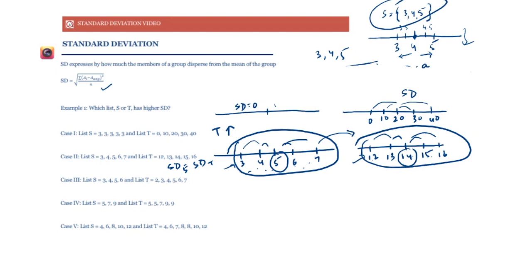In case 3: S = {3,4,5,6} and T = {2,3,4,5,6,7}. We have added two elements at the extremes. We know that adding elements at the extremes increases SD, so SD of T will be higher. Similarly, for list S = {5,7,9} and T = {5,5,7,9,9}, we are again adding elements at the extremes — far away from the mean of 7 — so we expect the SD of T to be higher.